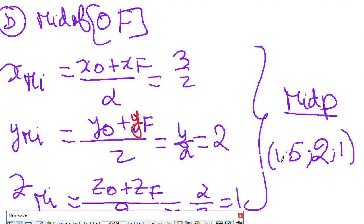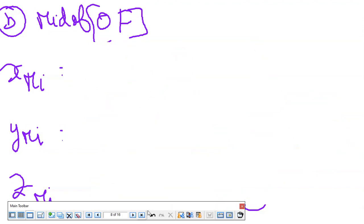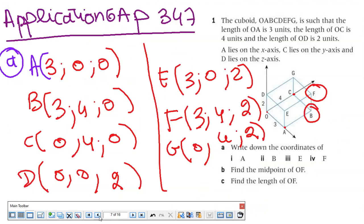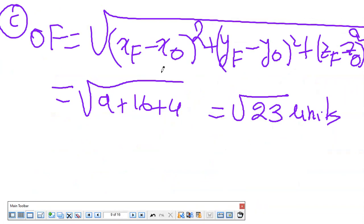For the last question, find the length of OF. I need to use the distance formula. What are the coordinates of O? O is the origin, so it's (0,0,0). Then I use the formula: X of F minus X of O squared plus the other terms, and I find the length of the segment.